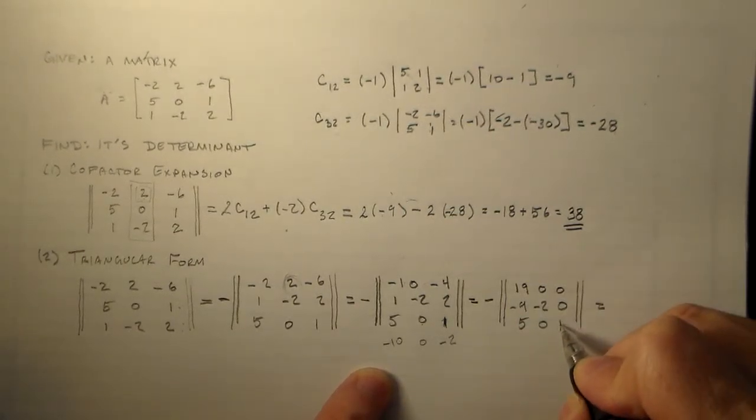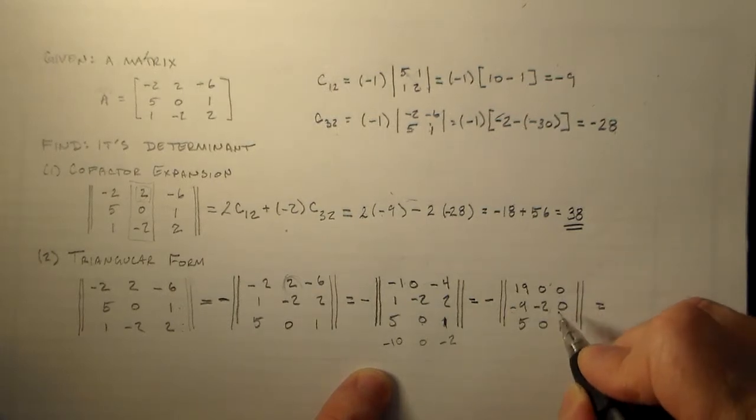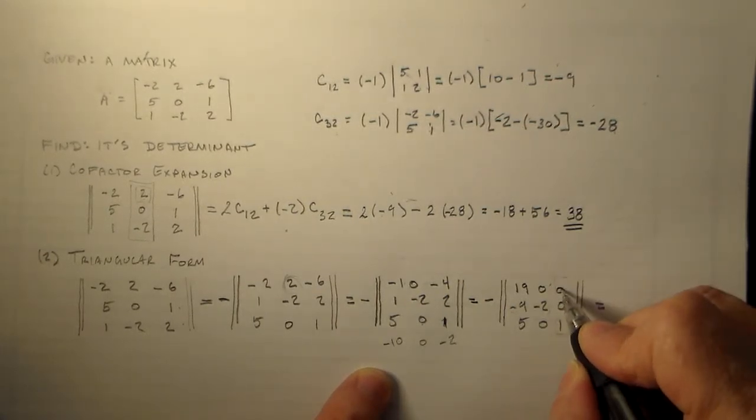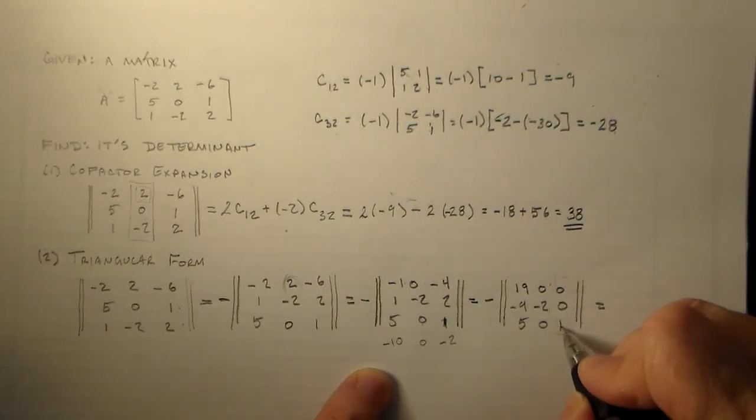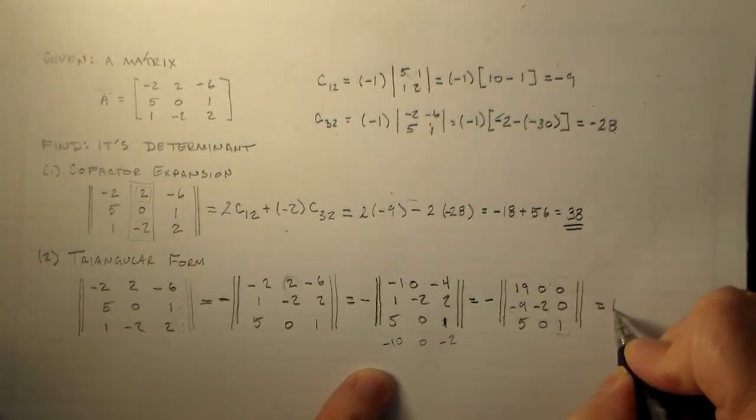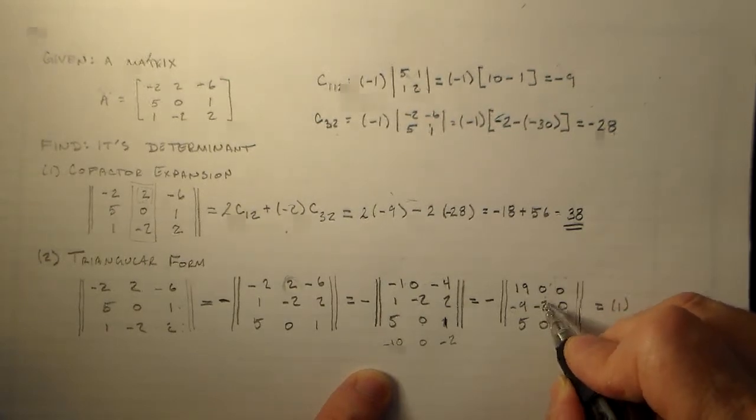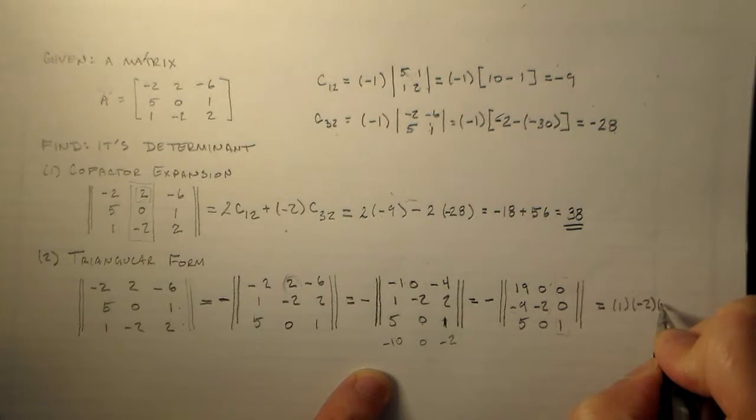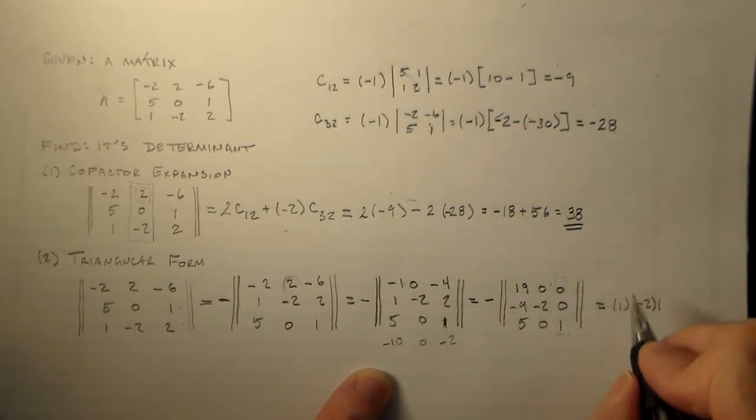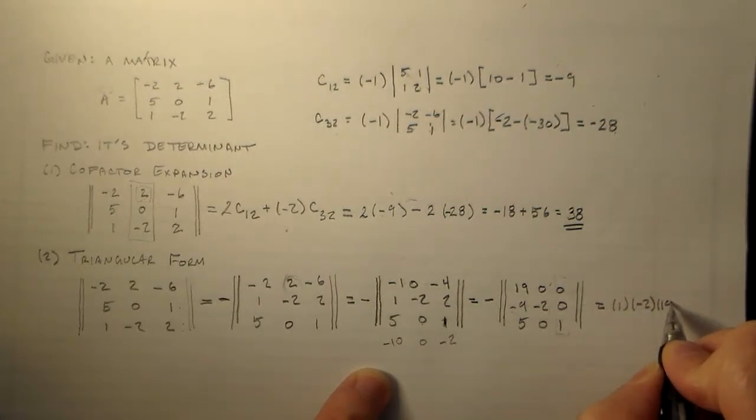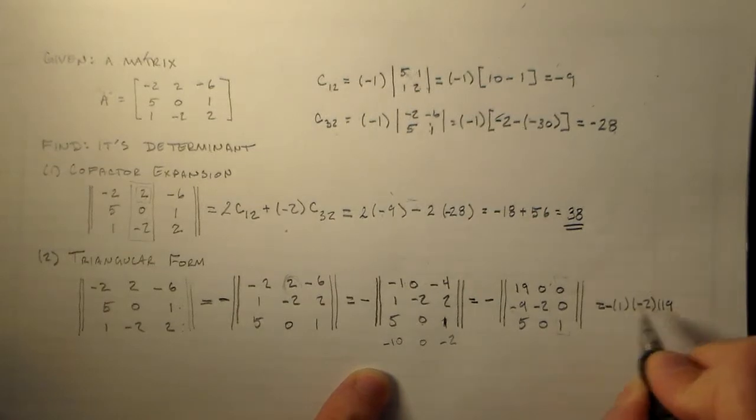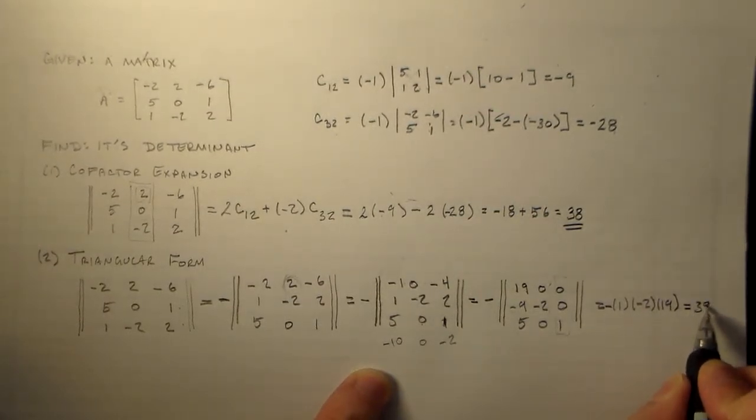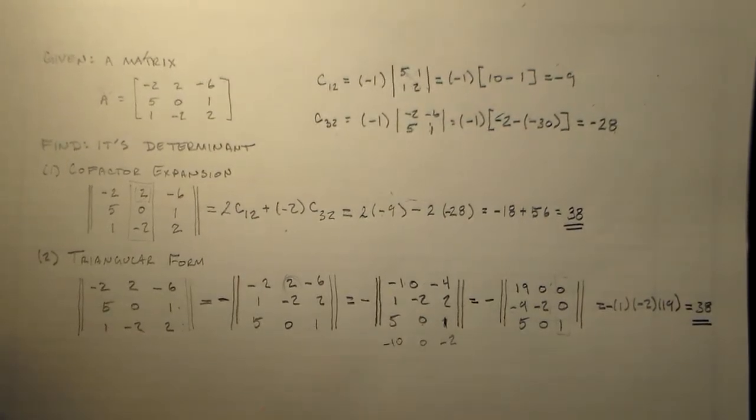And now if we take that determinant, it's just this times this cofactor matrix. Right. Because we can go down this line. Right. Zero, zero, one. And we only have to worry about this cofactor matrix. So, we have one times nineteen times minus two plus zero. So, we have one times minus two times nineteen. And we also have this minus sign up here. Right. And that's thirty-eight. Bang. We're done.